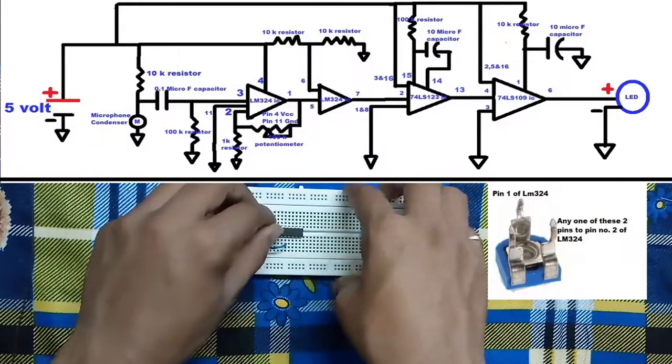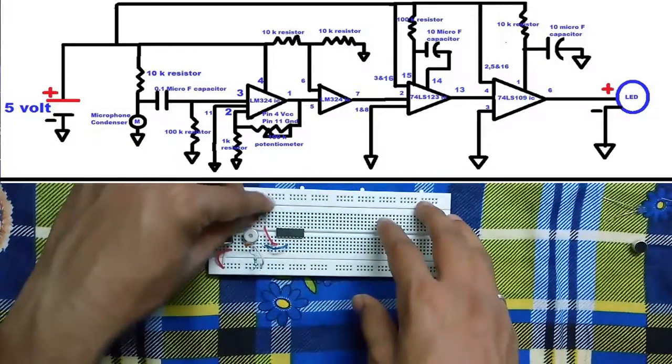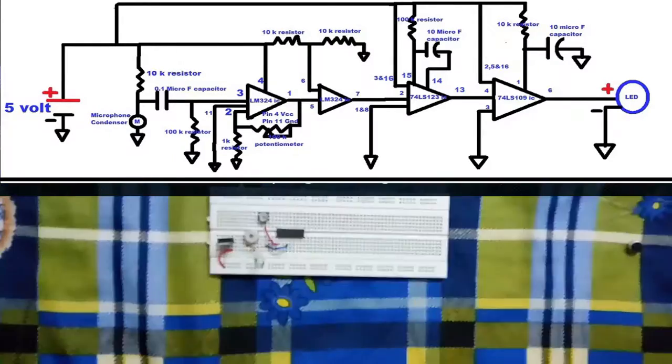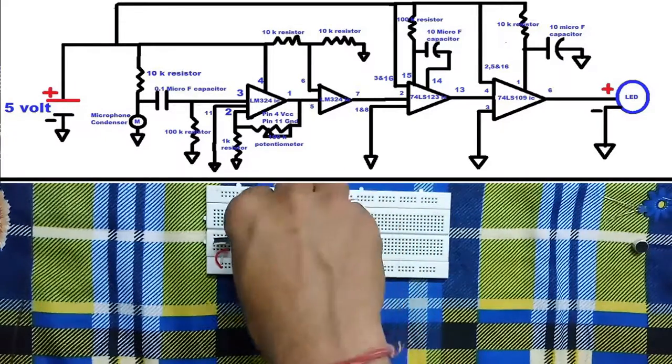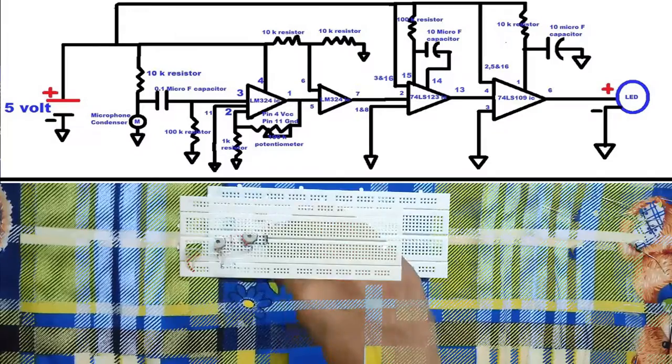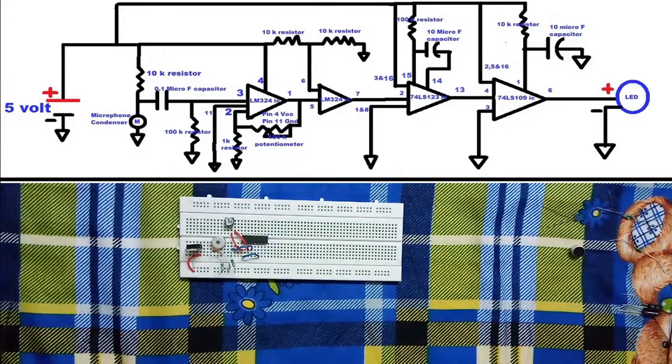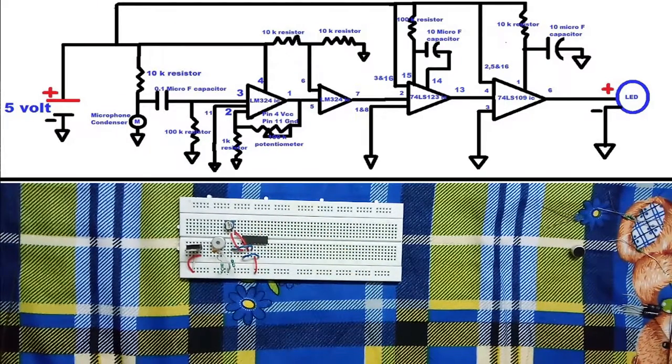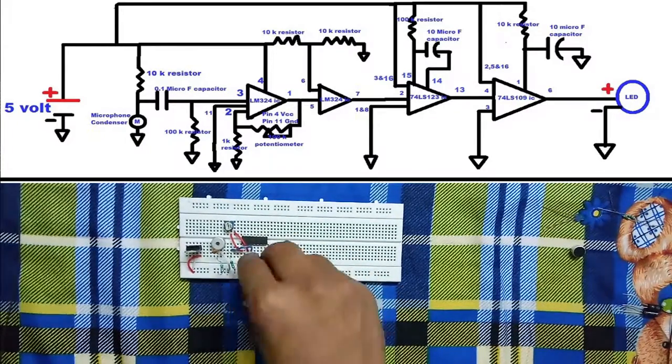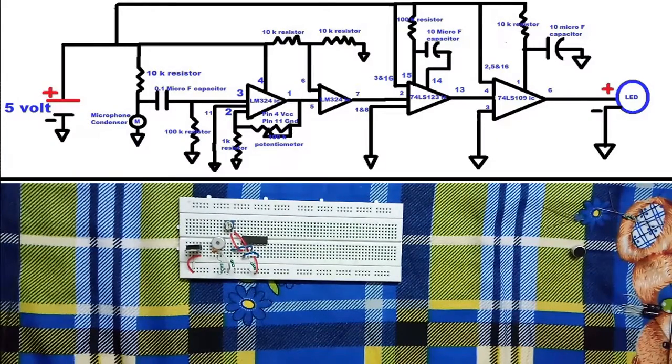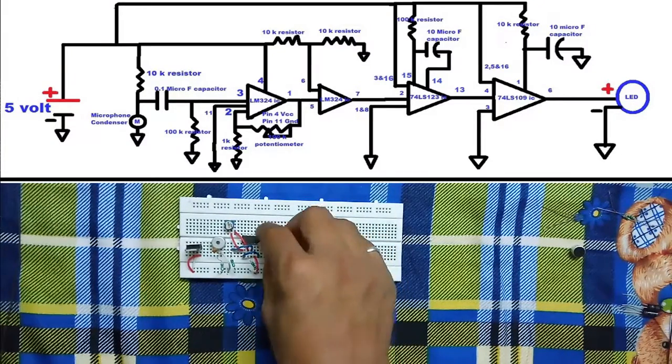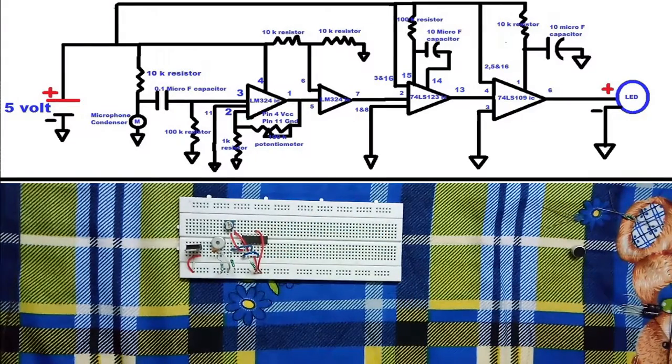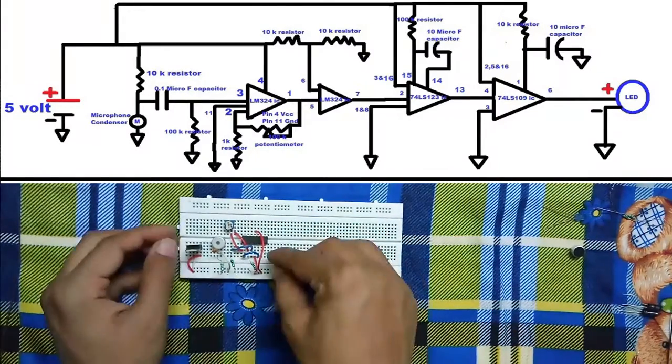We will connect the potentiometer through pins 1 and 2 of the LM324. One pin of the potentiometer is unused, and as per the circuit diagram, I have connected pin 1 of the LM324 to pin 5 of the LM324. Providing pin 4 to VCC and connecting ground through a resistor from pin 2 of the LM324. Providing ground to pin 11 through a 10K resistor.